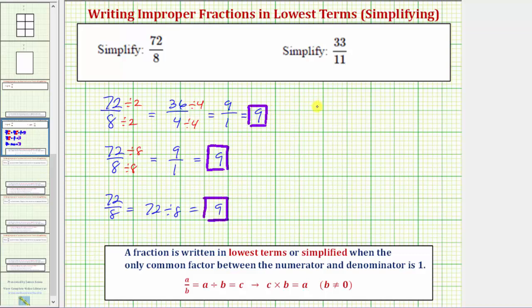Next, we have 33 elevenths, which is not simplified because 33 and 11 do share a common factor other than one — they share a common factor of 11. So we can create an equivalent fraction by dividing the numerator and denominator by 11. And because 11 is the greatest common factor between 11 and 33, the result will be a simplified fraction. 33 divided by 11 equals three, and 11 divided by 11 is equal to one. Three ones, or three divided by one, equals three.